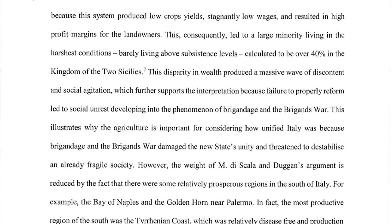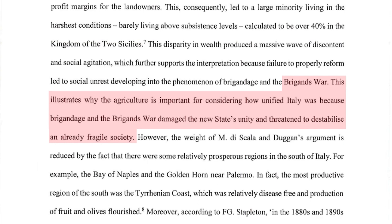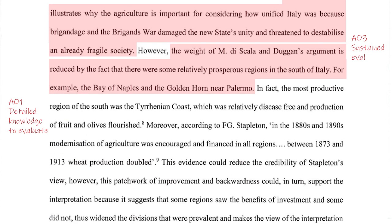On page 3, it's quite clear the candidate is aware that the main focus of the answer has to be unity. We're brought back to this when, in reference to the so-called Brigands War, the sentence 'this illustrates why agriculture is important, considering how unified Italy was, because the Brigandage and the Brigands War damaged the new state's unity and threatened to destabilise it' brings this neatly back to the question. There is a fairly constant critical look at the secondary sources: the weight of de Scala and Duggan's argument is reduced by the fact that there were some relatively prosperous regions in the south — for example, the Bay of Naples and the area around Palermo. It's this sort of detailed use of knowledge to test a historical interpretation that a moderator would be looking for if this answer is going to be placed in the top level.